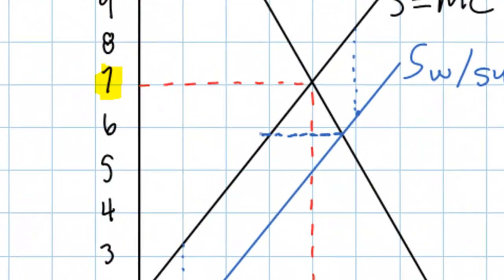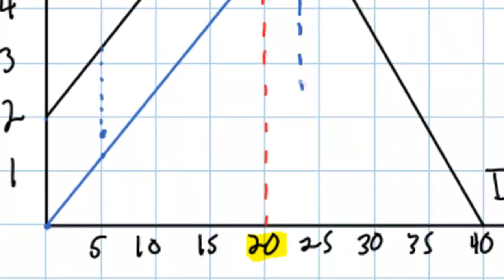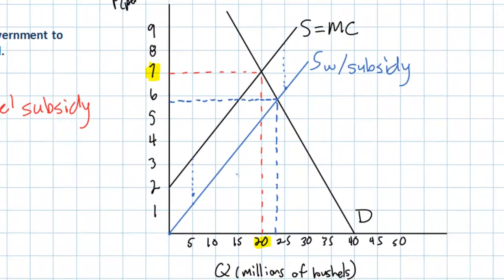Before the subsidy the price was around $7 per bushel. Following the subsidy the price falls to just below $6 per bushel, and the quantity demanded will increase due to the lower price — from around 20 million bushels to somewhere around 23 million bushels.